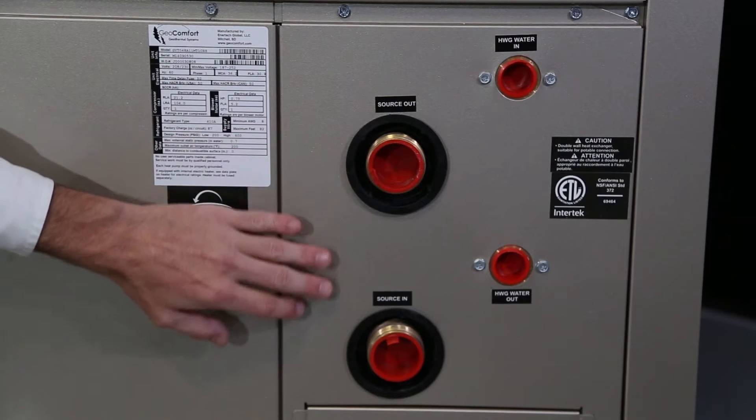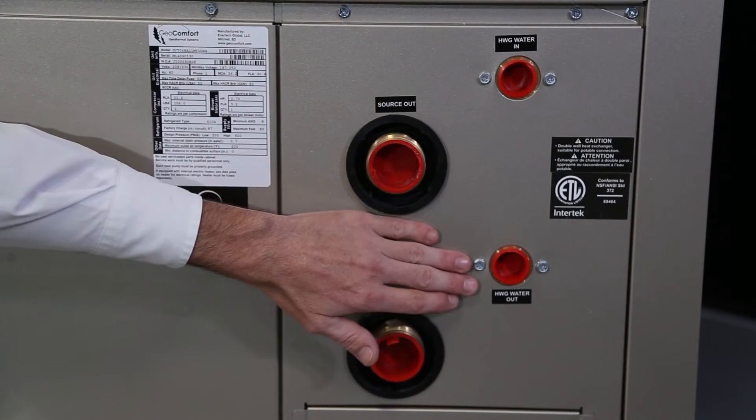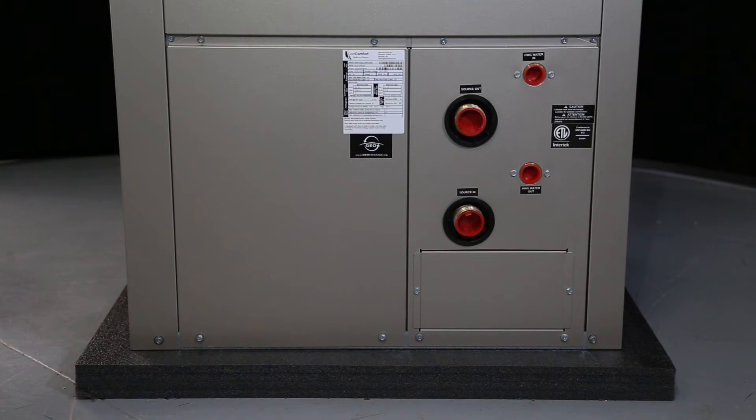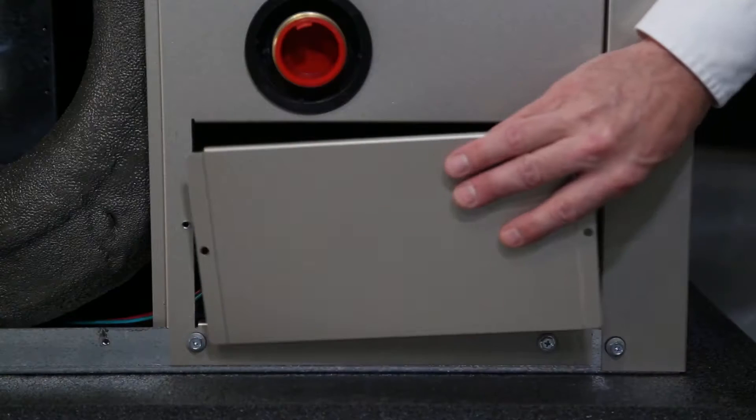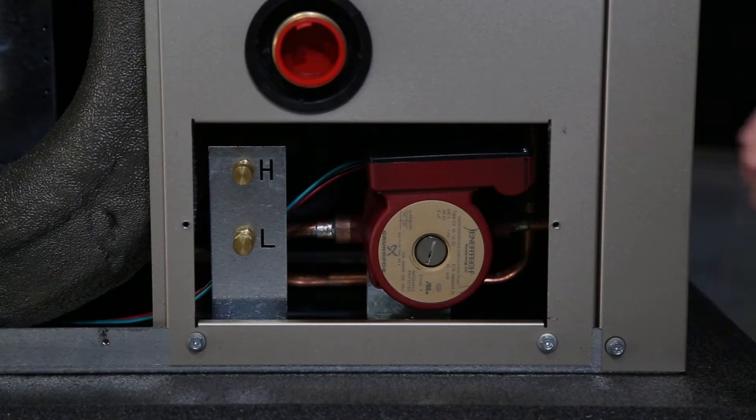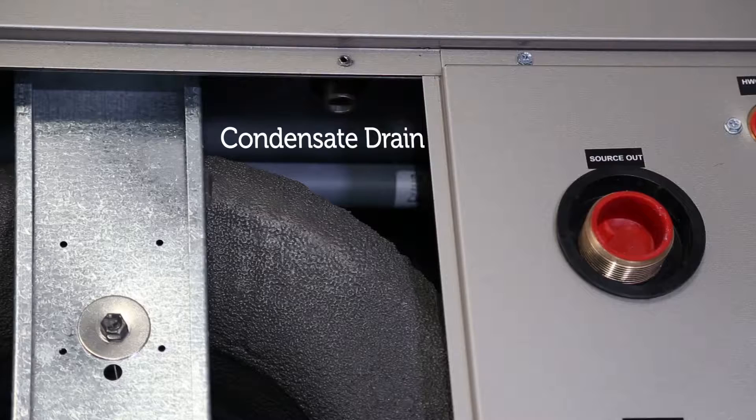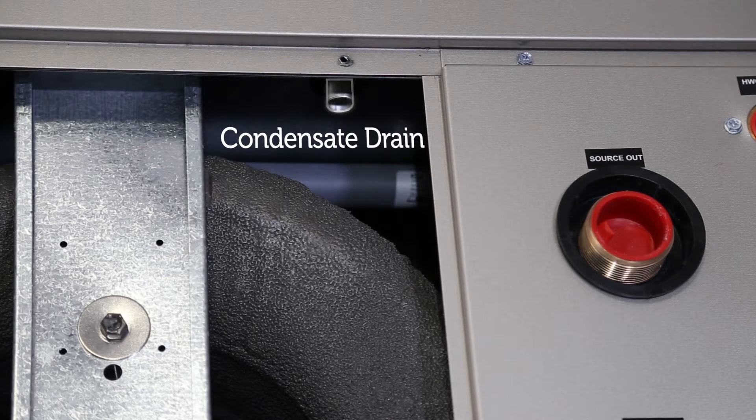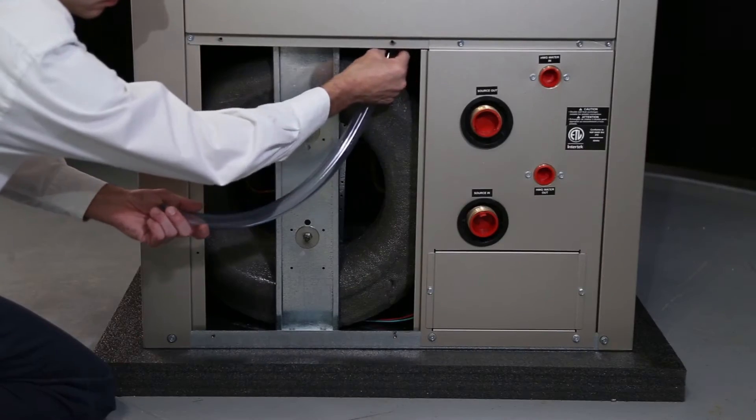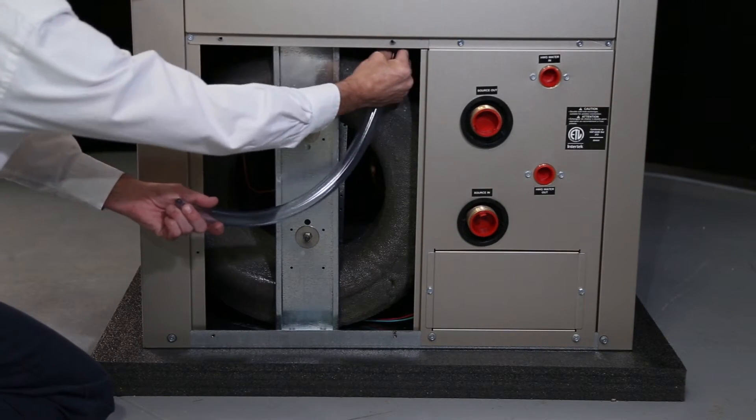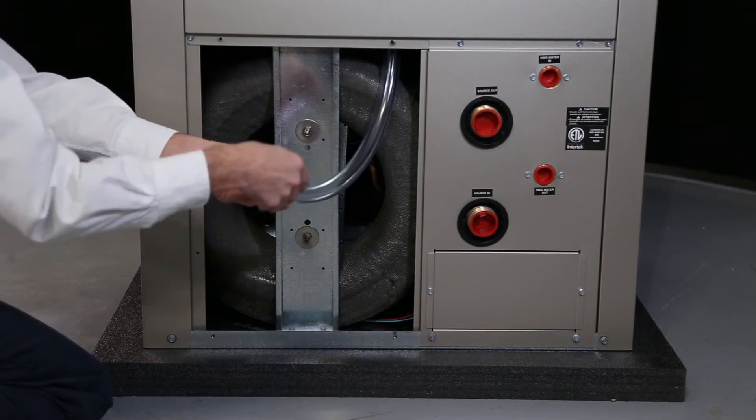The source in and out connections along with the hot water generator fittings are on the bottom of the air coil side of the unit. Under the water connections is the desuperheater pump and refrigerant ports. The condensate drain is in the center of the pan and is field selectable to exit on the coil side post in front or back. The drain options are labeled on the post.